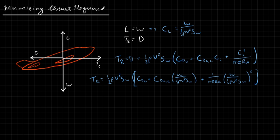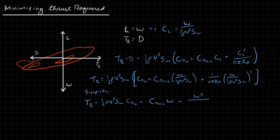We simplify by multiplying through by one-half rho v-squared S_w. What we get is: thrust required equals one-half rho v-squared S_w times C_D0, plus C_D0L times W, plus W-squared over (one-half rho v-squared S_w pi e RA). Thrust required is a function of some constants and the velocity, which appears in two places.